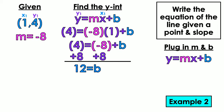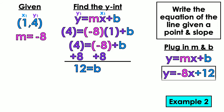Now that I have M and I have B, I put them into the equation. Y equals negative 8, because that's what M was. X plus 12, because that's what B was. And this is my final answer.